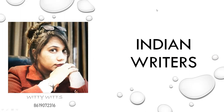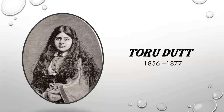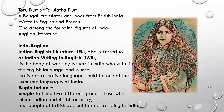We have studied some Indian writers, but the topic is not so small. Today we will be reading a new writer called Toru Dutt. Toru Dutt is a 19th century poet, with a time span of 1856 to 1877. She was a Bengali translator and poetess from British India — British India because she was from the 19th century when the Britishers were here.